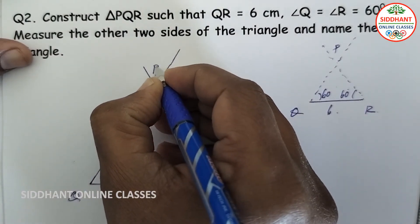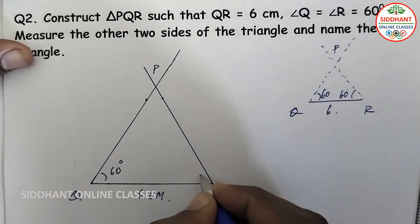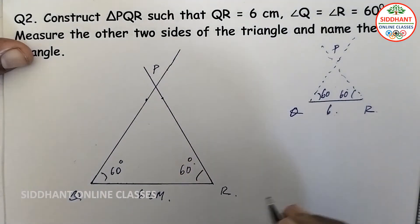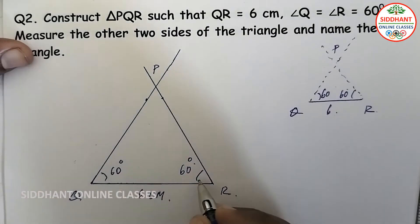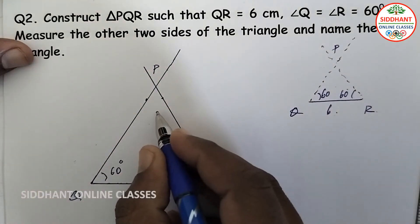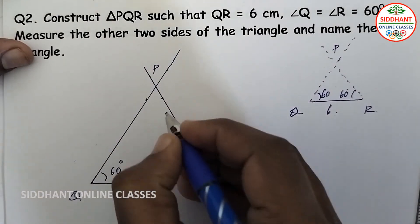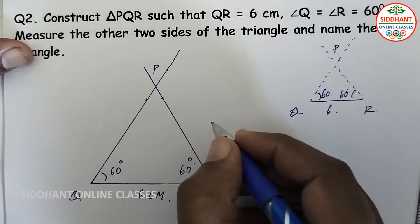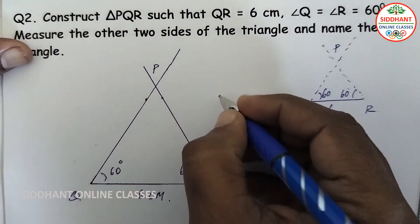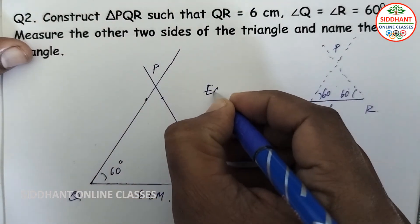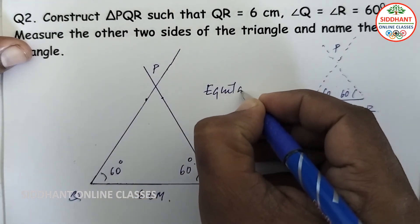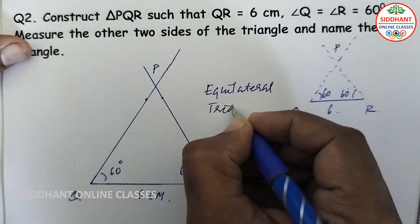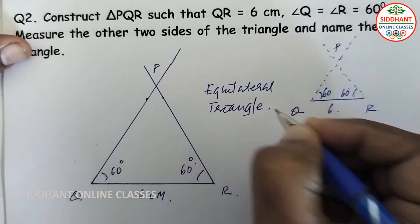We get intersection point P, and this angle is 60 degrees. Since two angles are 60 degrees, the third angle is also 60 degrees because the sum of three angles is 180 degrees. So all three angles are 60 degrees, and we say this triangle is an equilateral triangle.